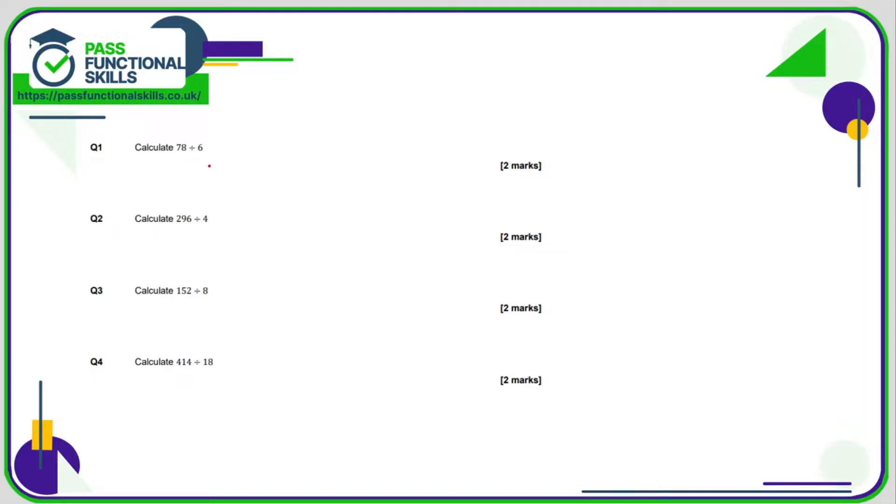So 78 divided by 6. Well, I don't know my 6 times table that high, so I'm going to do a bus stop. How many 6's go into 78? What is 7 divided by 6? Well, 7 divided by 6 is 1 with a remainder of 1, which I'll put on the 8. 6 into 18, or 18 divided by 6, is 3. So the answer is 13.